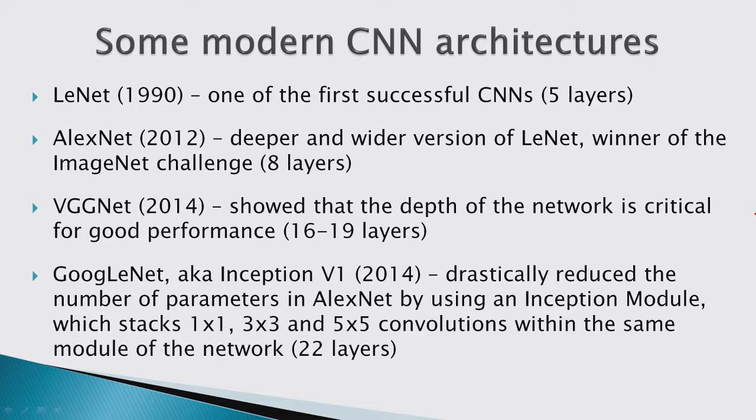Here I want to mention some modern CNN architectures that most of the winners used in some form. LeNet in 1990 was one of the first successful CNNs, but at that time there were no fast computers so it wasn't used for anything significant. AlexNet was the one that made a difference for the ImageNet challenge. In 2014, there were two important ones: VGGNet, which showed that making the network deeper significantly increases prediction accuracy, and GoogLeNet — also called Inception V1 — which introduced the inception module.